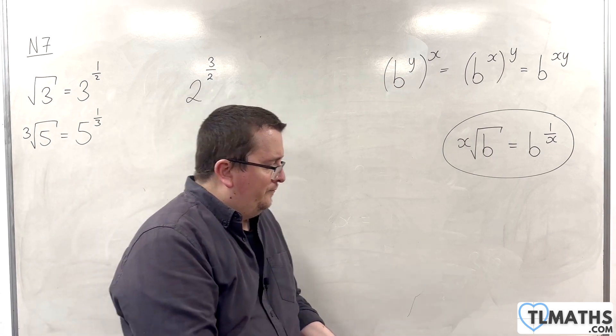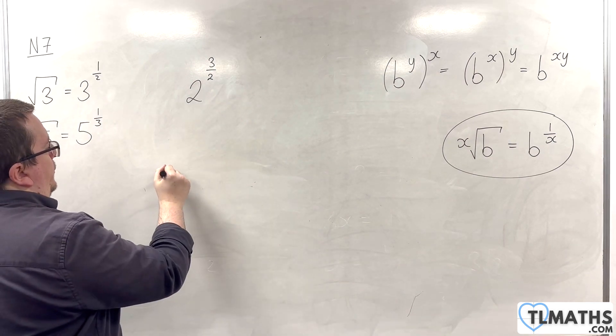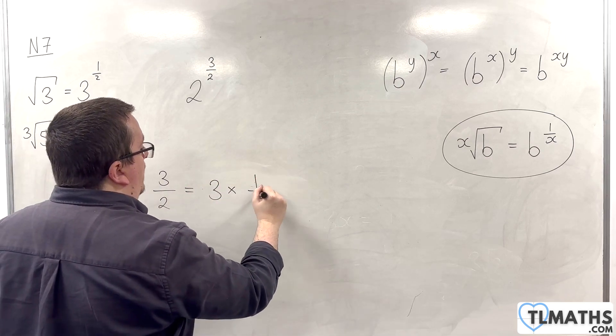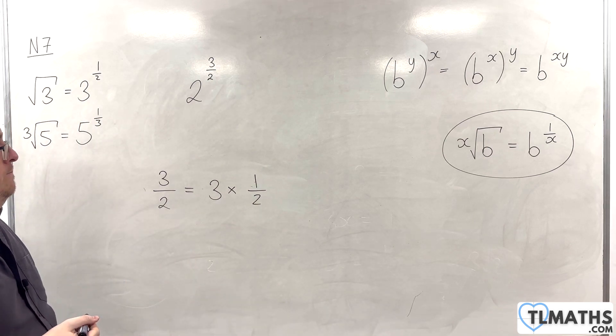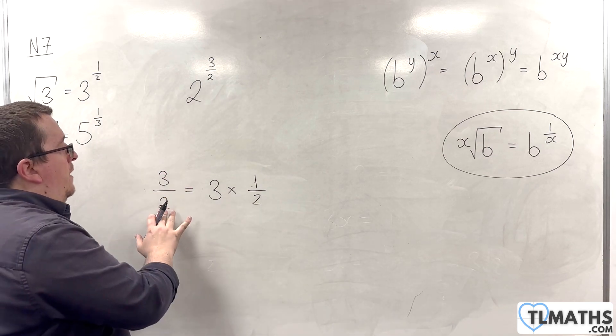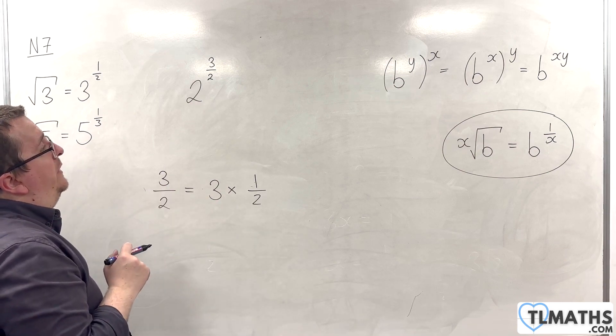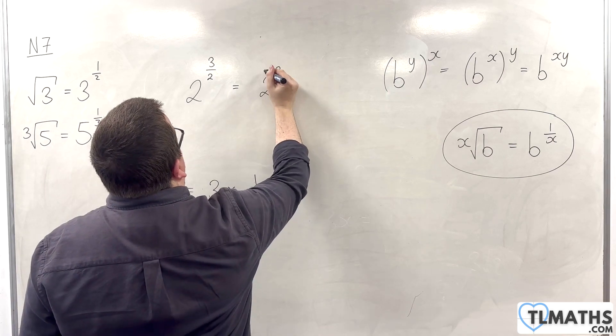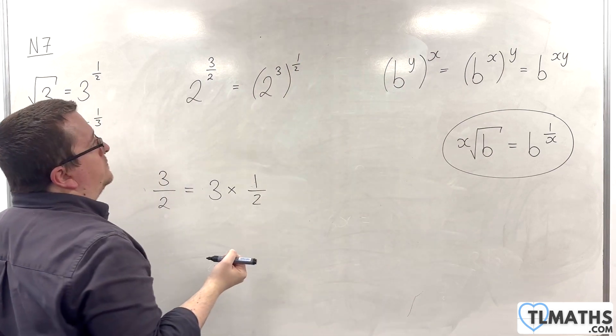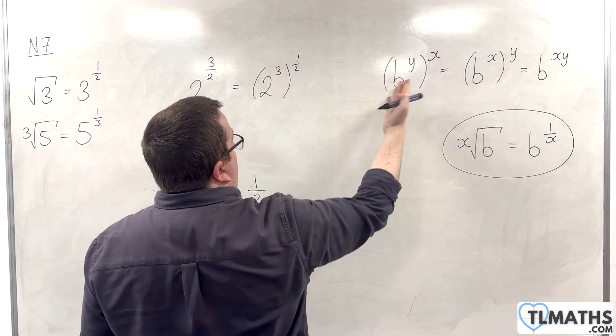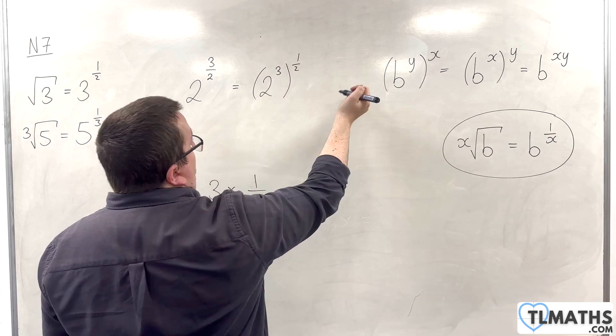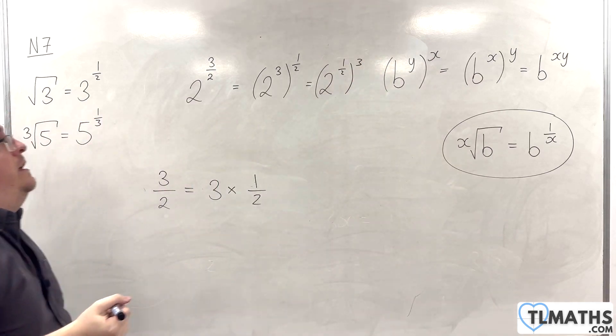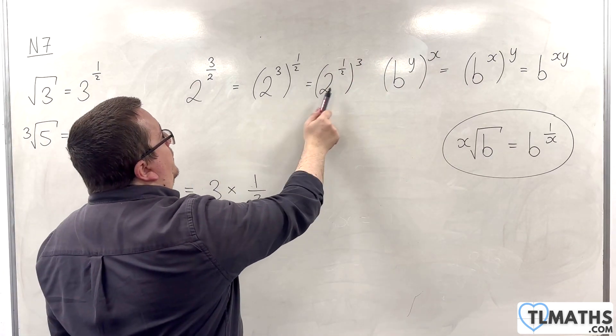The second thing is that 3 halves is the same as saying, well, that's 3 times 1 half. So, 3 over 2 being the same as 3 times 1 half means that I should be able to write that as 2 cubed to the power of 1 half. Or, given that 3 times 1 half is the same as 1 half times 3, as 2 to the power of 1 half to the power of 3. Both of these two things must be the same.